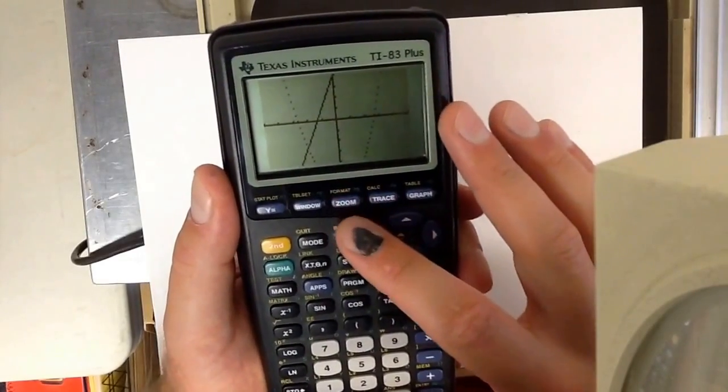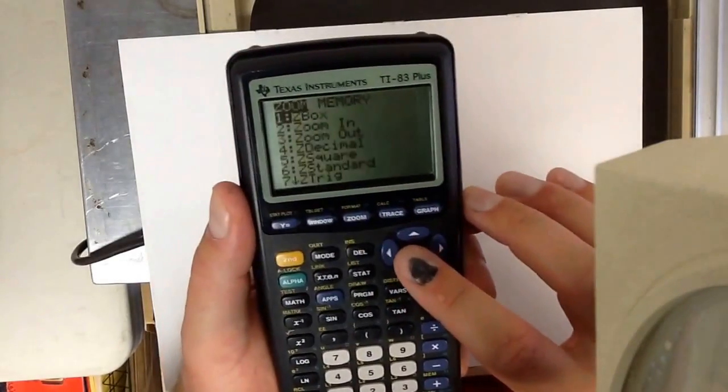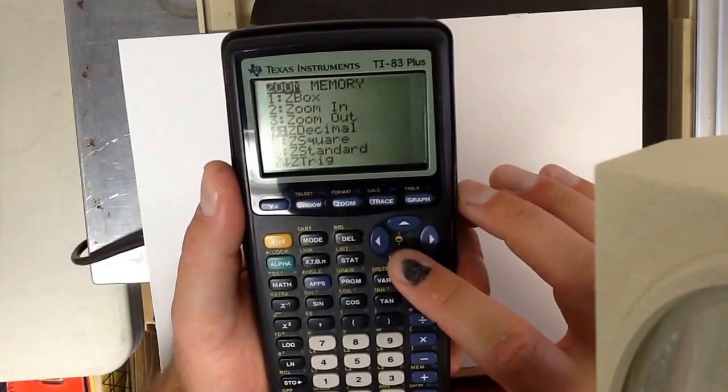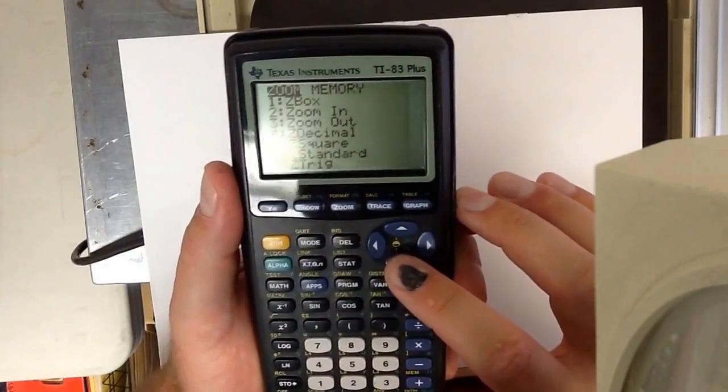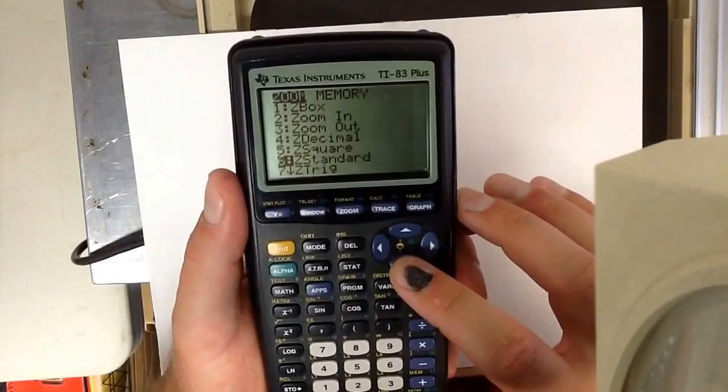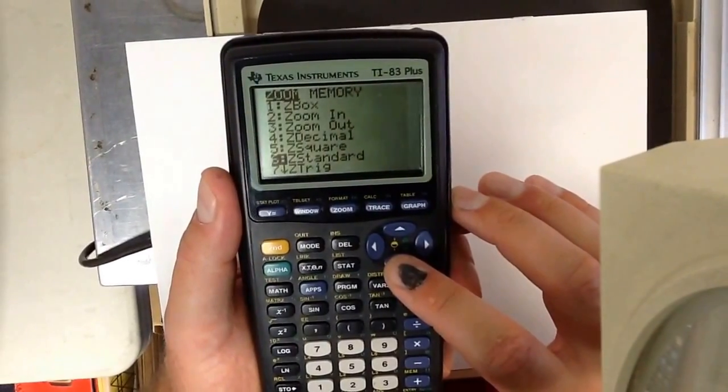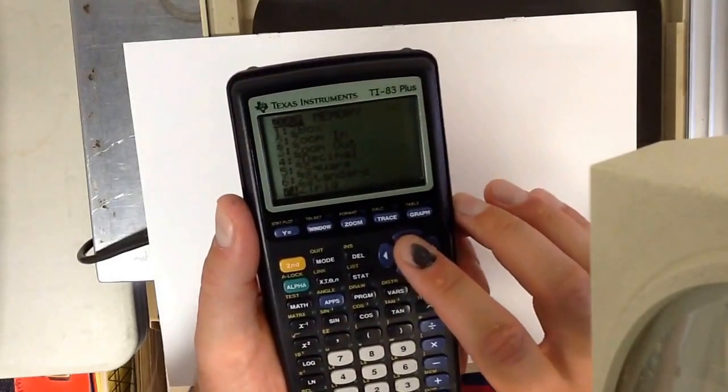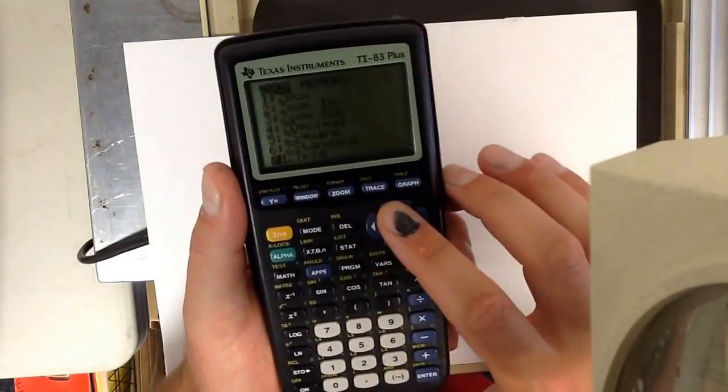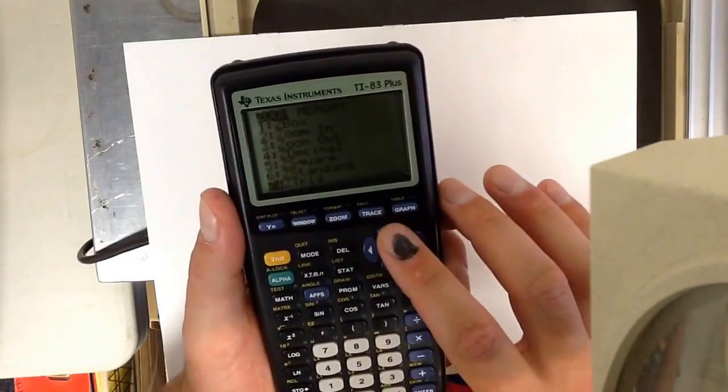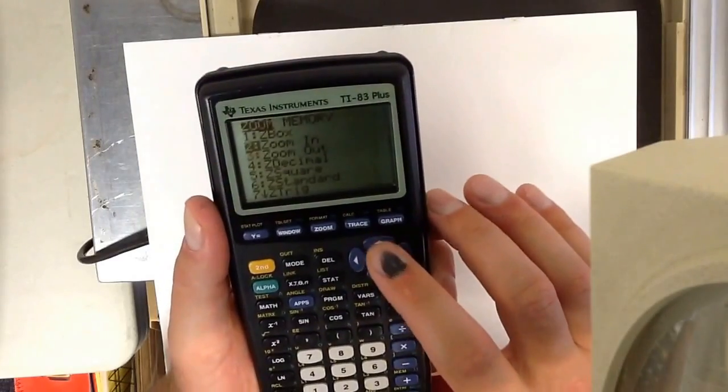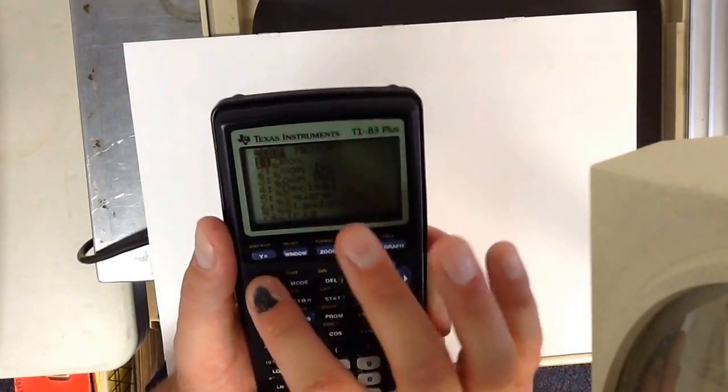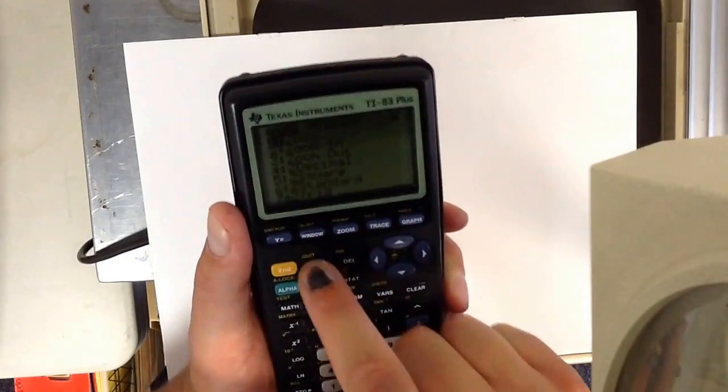There's actually an easier way to zoom by pressing the zoom button. You can zoom in, zoom out, zoom in at a certain decimal, zoom standard which sets it back to negative fifteen fifteen and negative ten ten like we saw. You can zoom as a trig in trigonometry which we'll get into in a later chapter. We'll need to zoom trig all the time so our tick marks line up where they should be. But for now I don't want to change anything so I go second mode to quit. Brings me back to the front page.